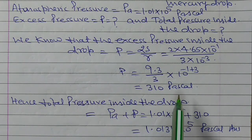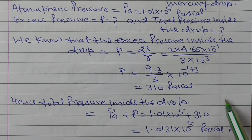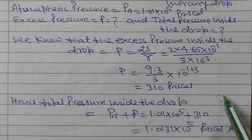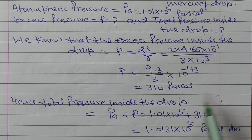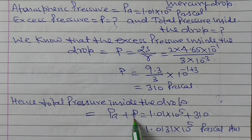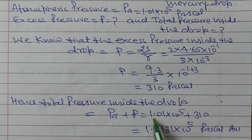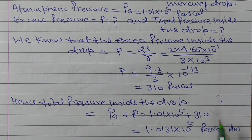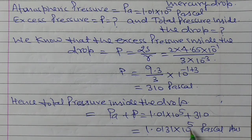Now we need to calculate the total pressure inside the drop. The total pressure means both the atmospheric pressure and the excess pressure inside the drop are added together. So total pressure = atmospheric pressure + excess pressure = 1.01 × 10⁵ + 310 = 1.0131 × 10⁵ Pascal. This is the answer to this problem.